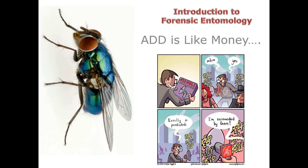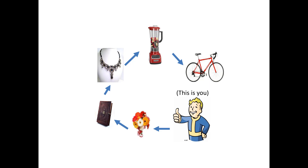You can think of accumulated degree days for flies just as if you were saving up money. This is you, and you want to buy a few things: flowers for your mom, a cute notebook, a nice necklace, a blender, and a bike — in that order. You need to buy these five things, and each one costs a certain amount. There's no dickering, no lowering the price. You need this amount of money.